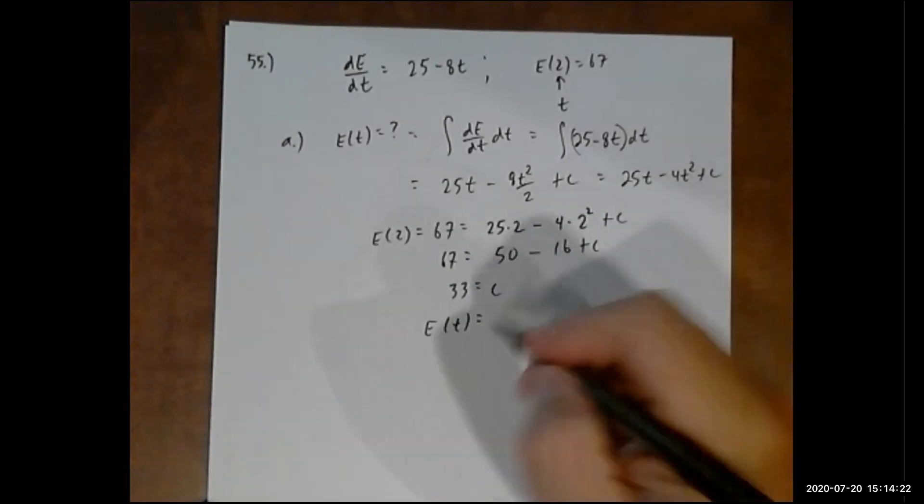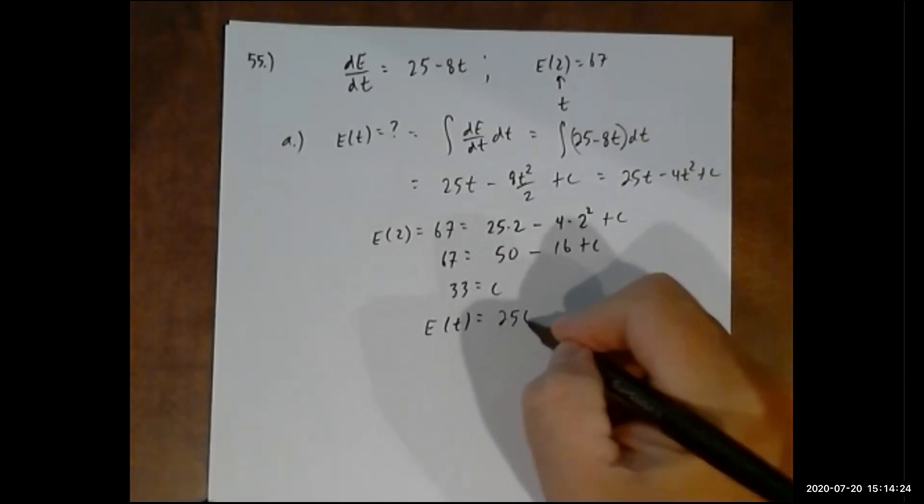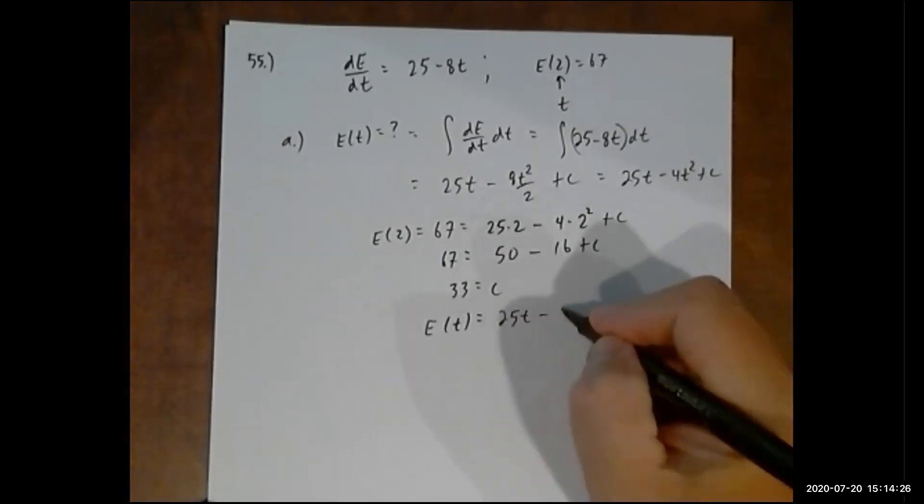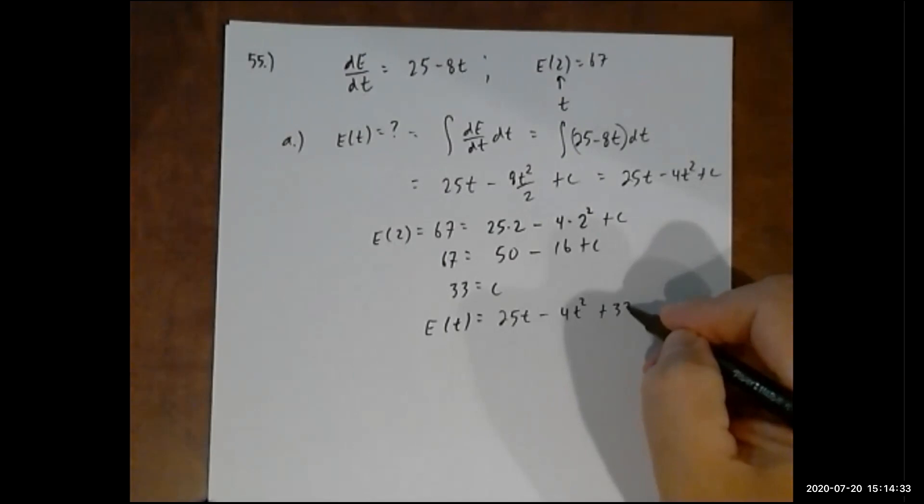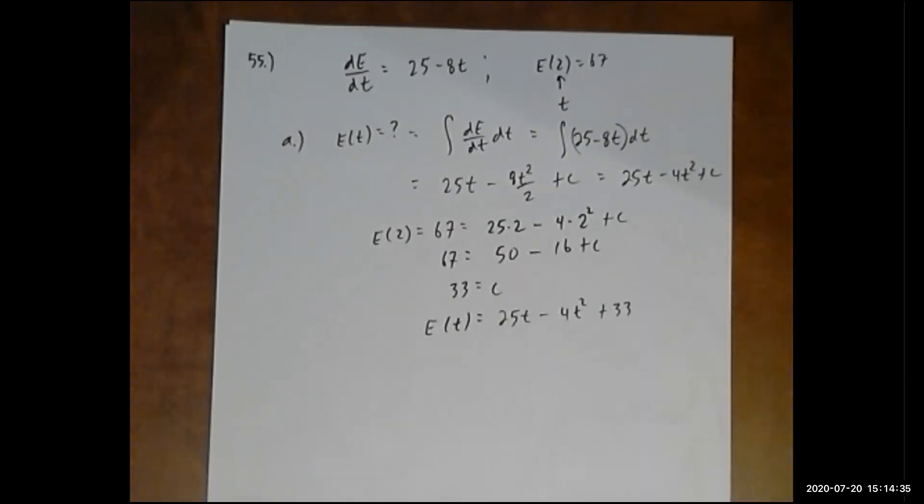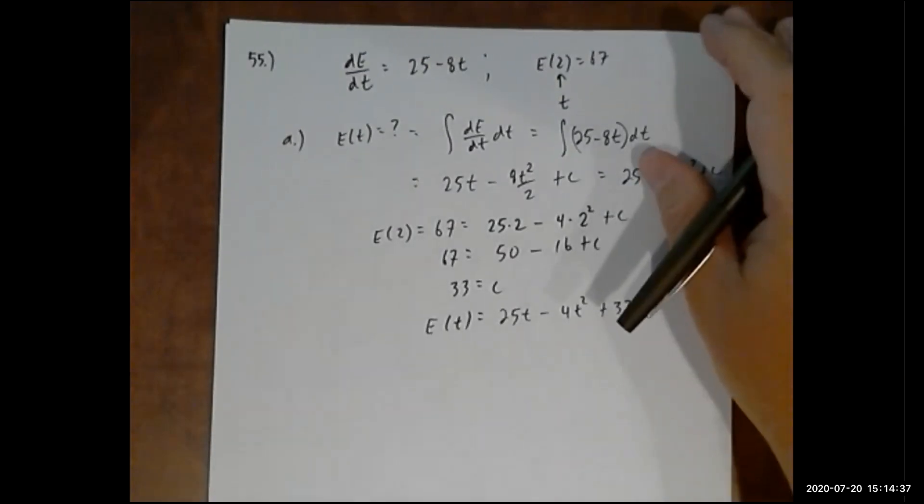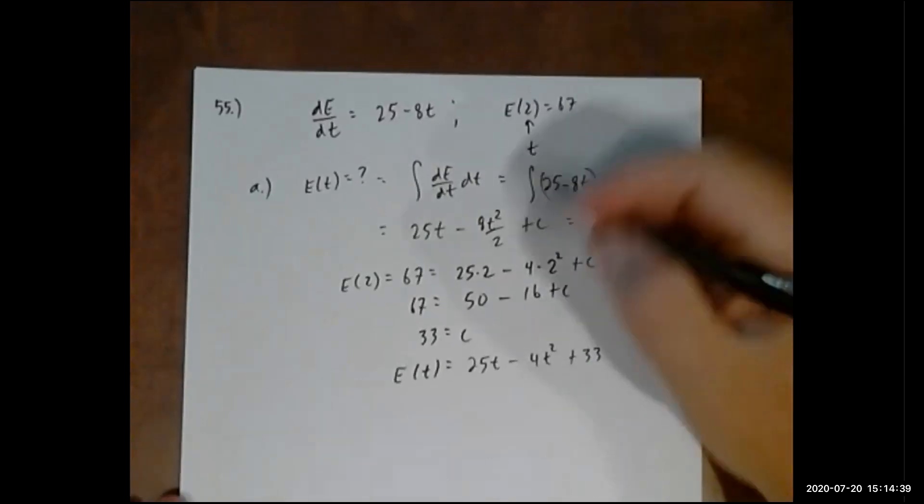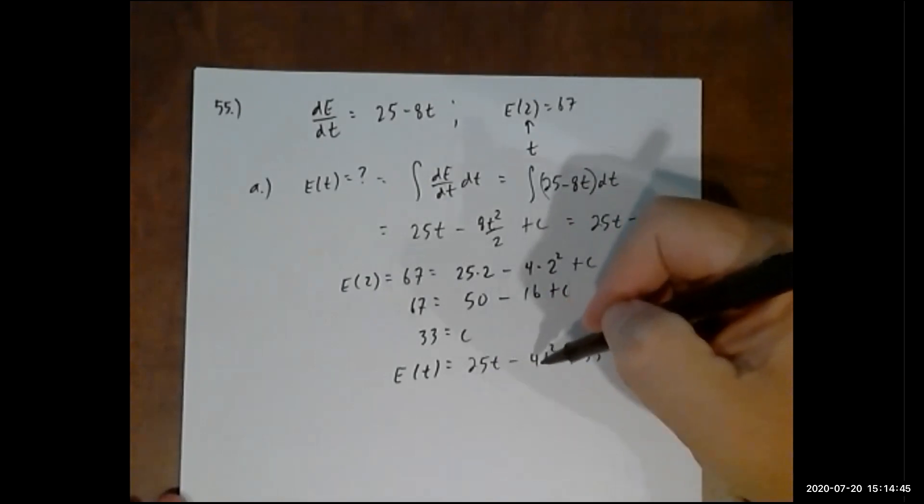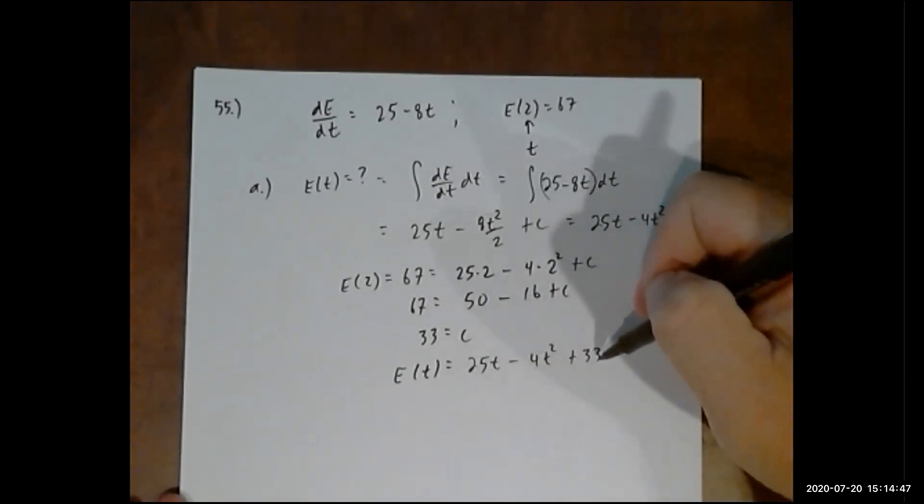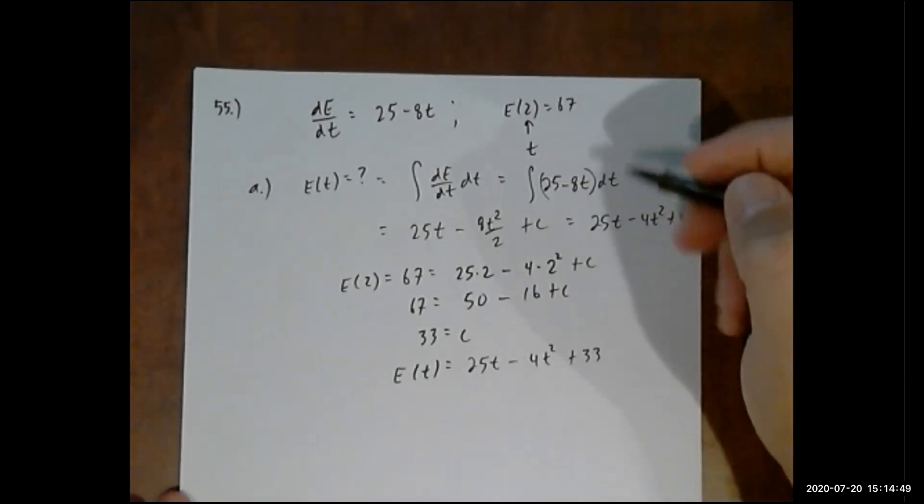Therefore, E(t) is 25t minus 4t squared plus 33. I can check that real quick: if I plug in 2, 50 minus 16 is 34, plus 33 is 67. I think it's correct.